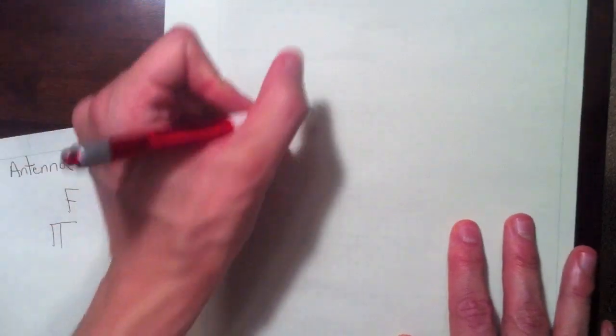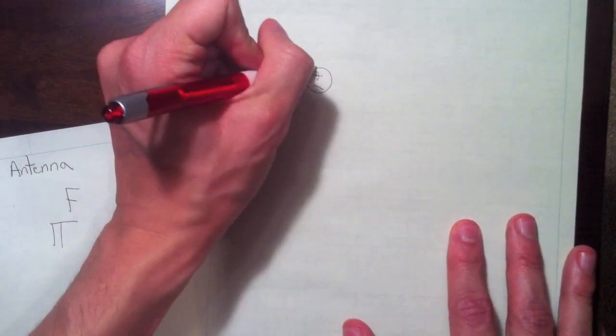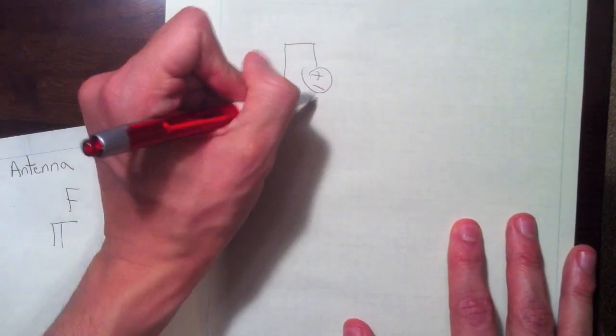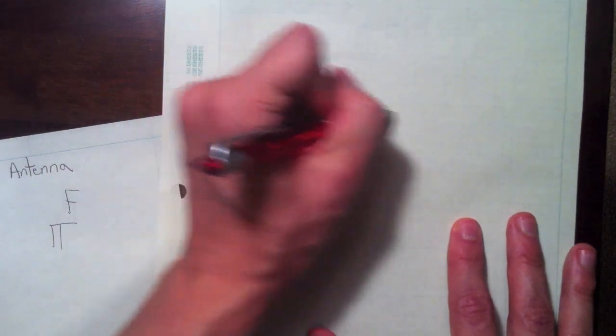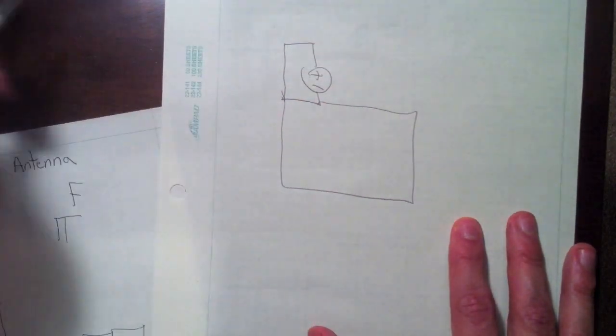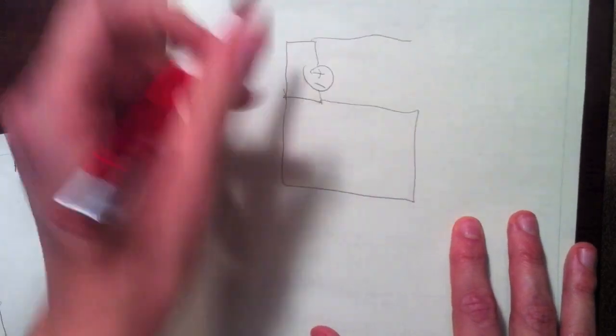So we have our basic IFA structure. Again, here's the shorting arm, you can call it that. It's just a parallel inductor. So we have this arm.